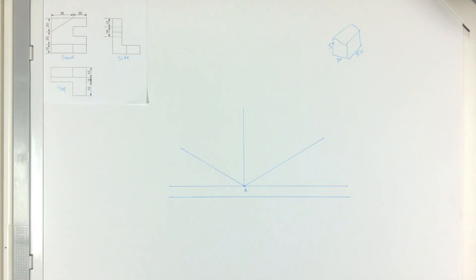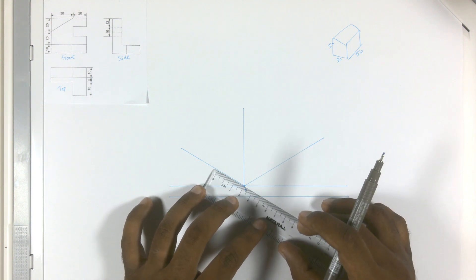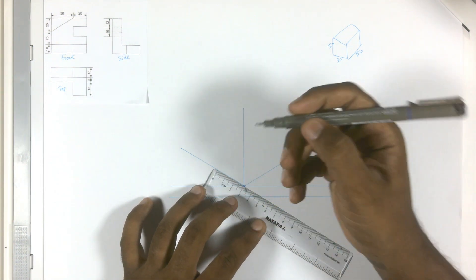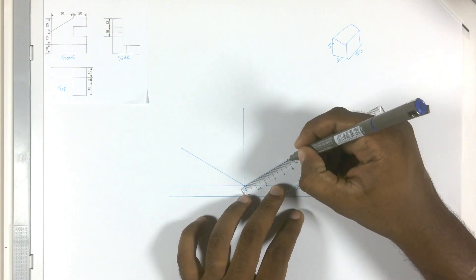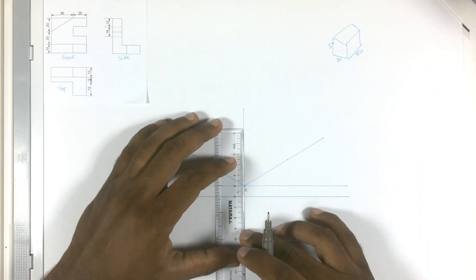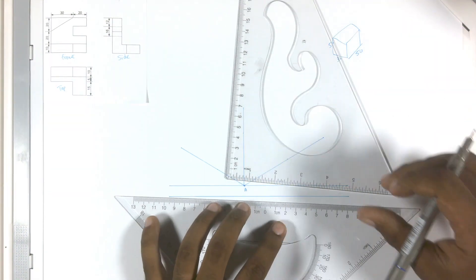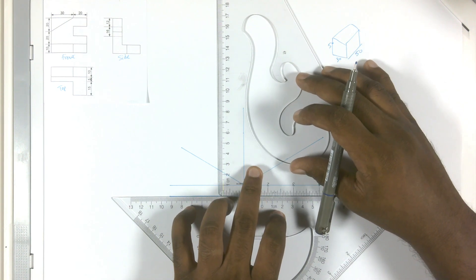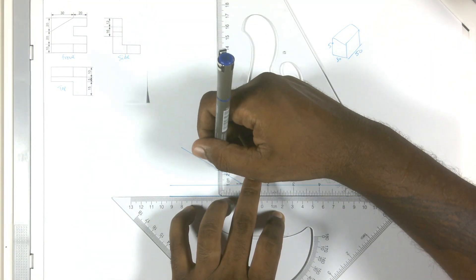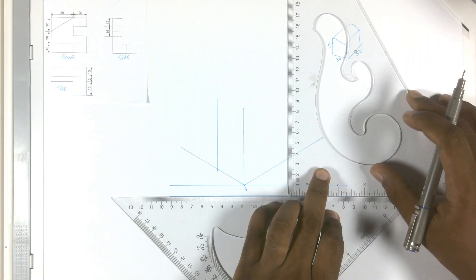Now let's use a small ruler to mark out the dimensions. For the depth it will be 30, so three centimeters — put a dot on zero. For the length it will be 50 millimeters, five centimeters — a dot on 5 centimeters. For the height, same: 5 centimeters. Place the ruler on the second horizontal line, make sure it is straight, then draw the verticals — one line here and the other one at 5 centimeters.